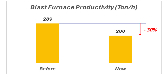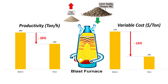Reducing productivity by almost a third sounds backwards — we just spent all this time talking about maximizing throughput and CMH. But there's a reason: they plan to achieve this slowdown by switching to a lower-quality, cheaper mix of raw materials going into the furnace. Cheaper inputs, but slower output. Analysis showed that this switch, while cutting productivity by 30%, would also cut the variable cost — the cost of those raw materials — by a significant 16%.